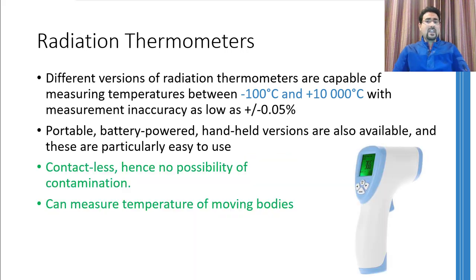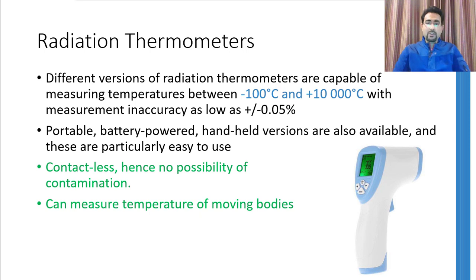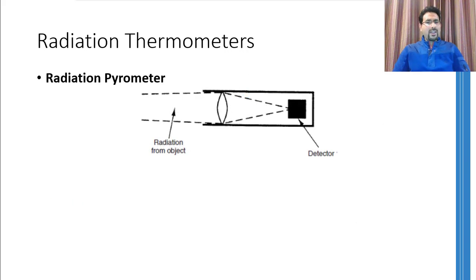You must have seen a variant of this radiation thermometer especially during the days when COVID-19 struck us. Before entering any facility, your body temperature was checked using a handheld radiation thermometer to ensure you did not have fever. Radiation thermometers can be made as handheld devices which are convenient and easy to use. Furthermore, these devices are contactless, hence they cannot load the system unlike all other temperature sensors discussed. Another major advantage is that they have a very short rise time — they can sense temperature in milliseconds, making them suitable for measuring the temperature of moving objects as well.